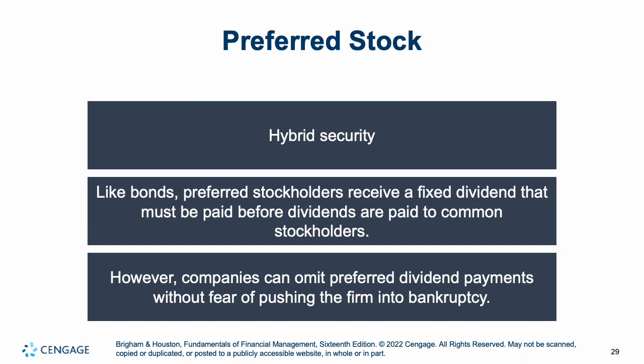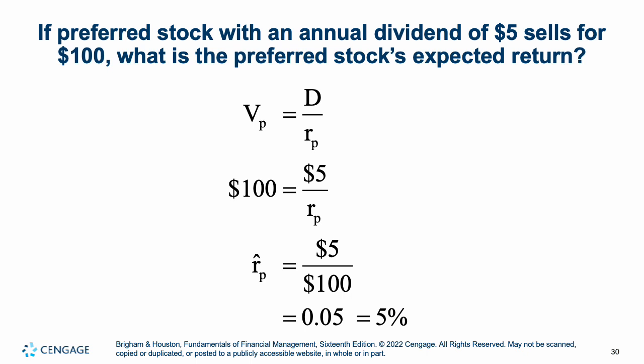If preferred stock with an annual dividend of $5 sells for $100, what is our return? Treat it as a perpetuity: value equals the dividend payment over the return. You can back out the return using the perpetuity formula, getting 5%. We will look at preferred stock quite a bit more, but that's the introduction to it and how we can find the expected return of preferred stock. That takes us to the end of Chapter 9 on valuing stock prices, and we will continue with more of these concepts in the chapters to come.